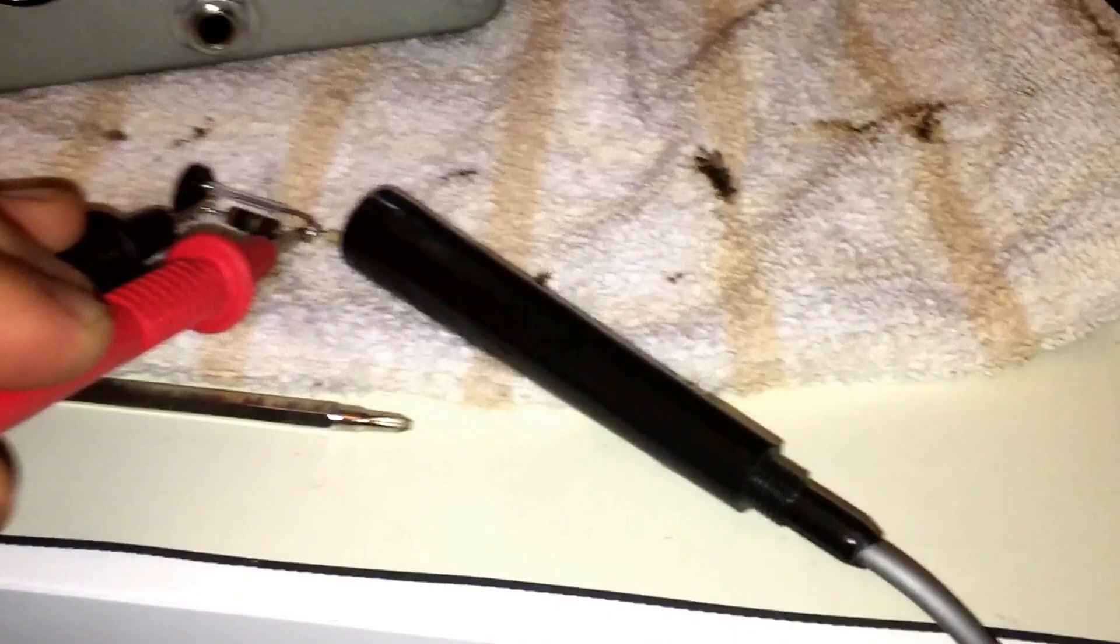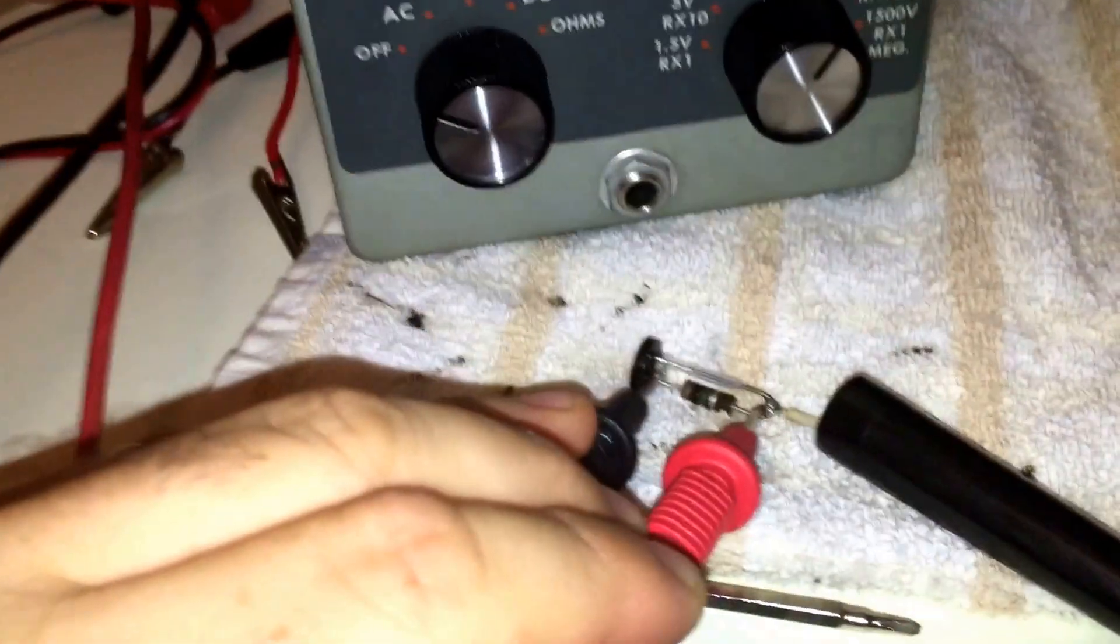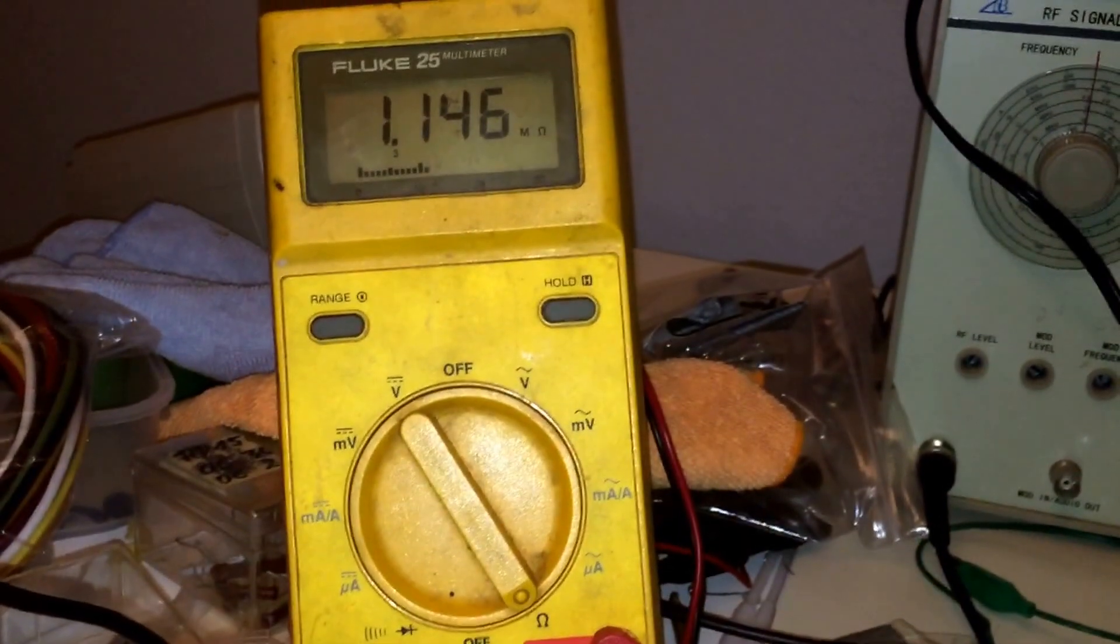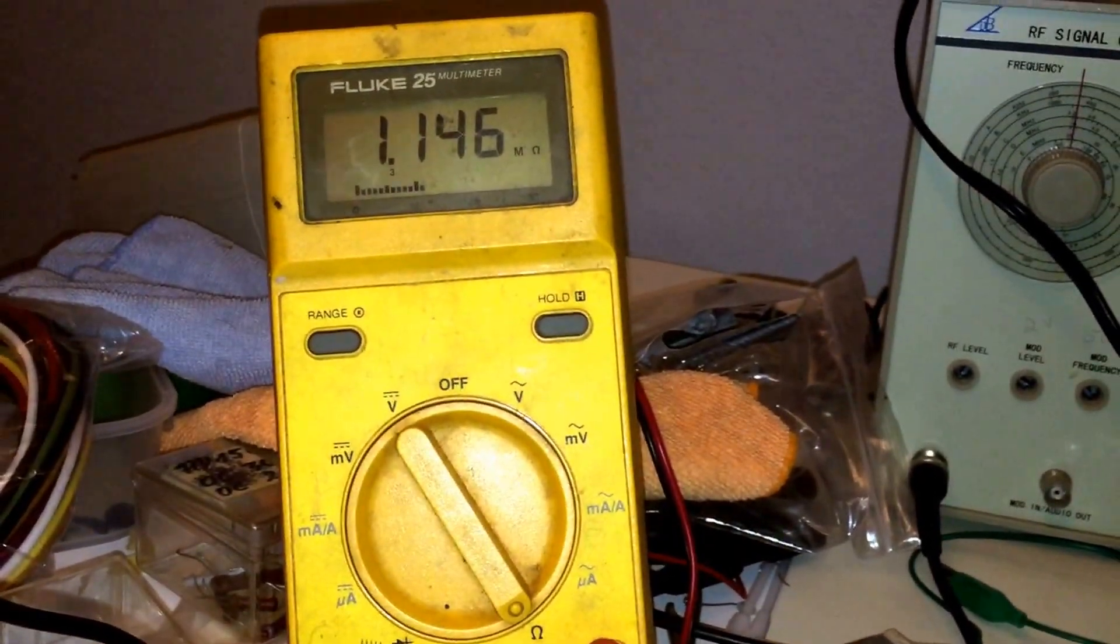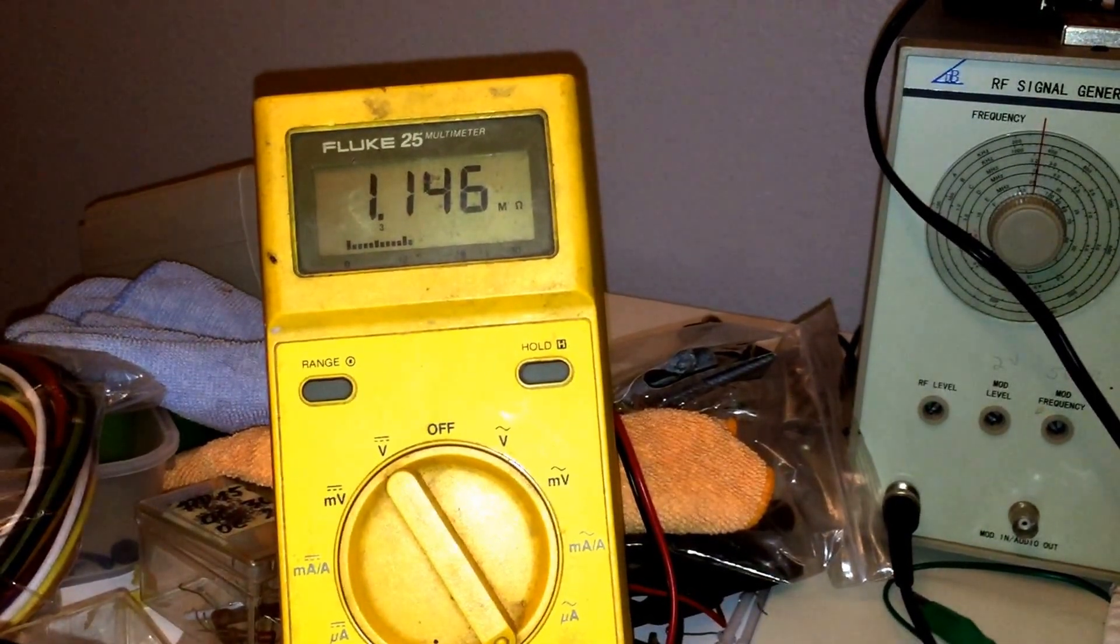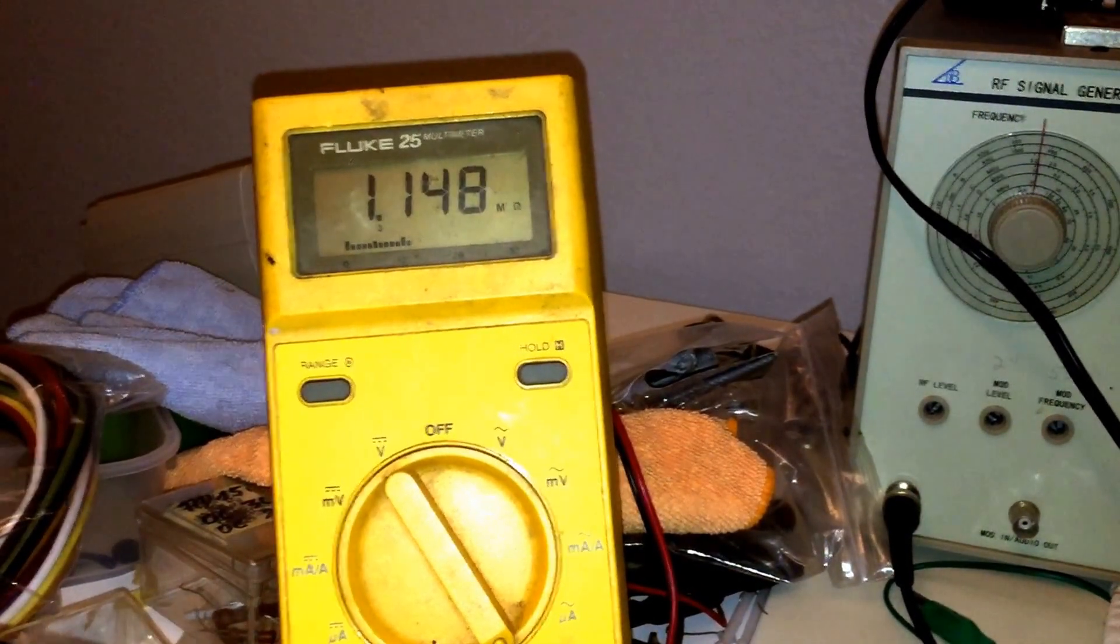There's a couple other tests I want to do. I've taken apart the probe that has the one megohm resistor for DC and cleaned up all the pieces using a little DeoxIT magic. I'm reading 1.146 megohms. I want to check the tolerance - it's around 10 percent.